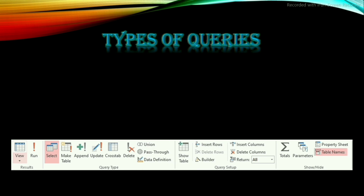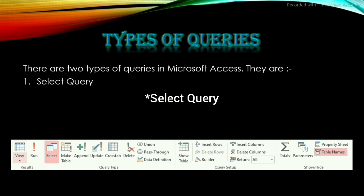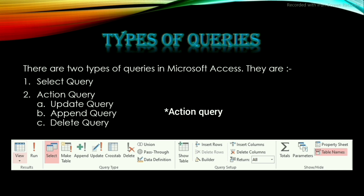Now, let's have a look at the types of queries. The types of queries are: Action Query, and under Action Query fall Delete Query, Update Query, and Append Query.